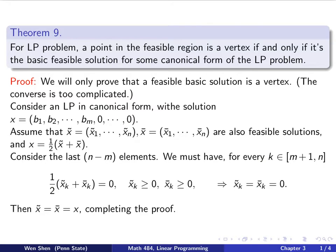So this means that x tilde and x bar, they are both solutions with the n minus m, the final many elements to be 0, so they must be the basic solution with the basic variables of x1, x2, and xm. And there's only one possibility that they are the same, they are equal to x. So this completes the proof.